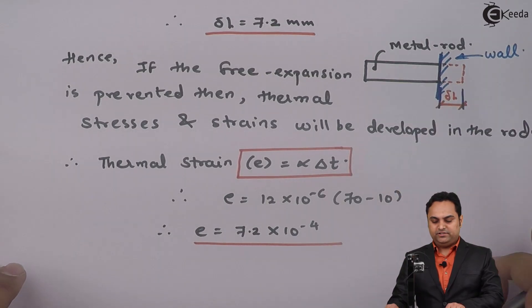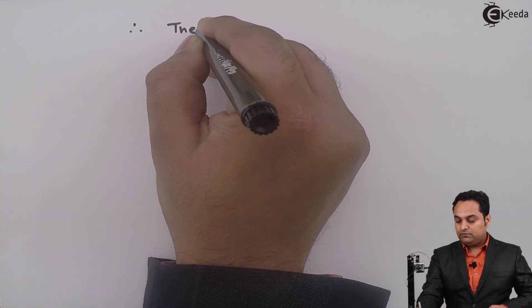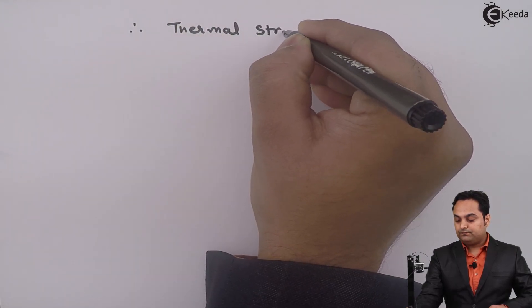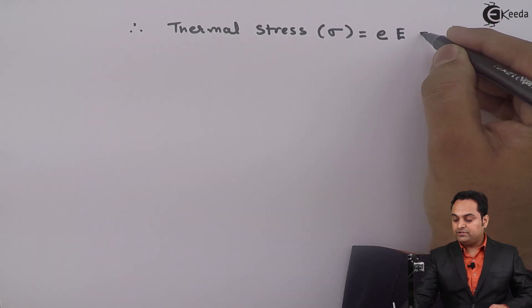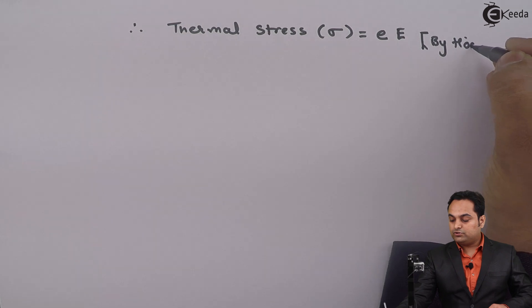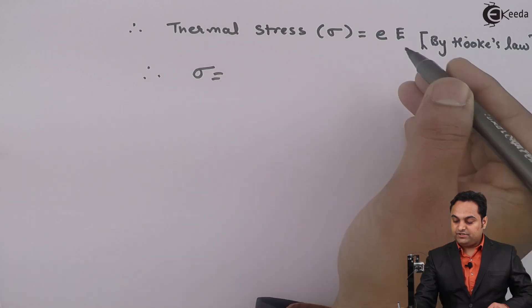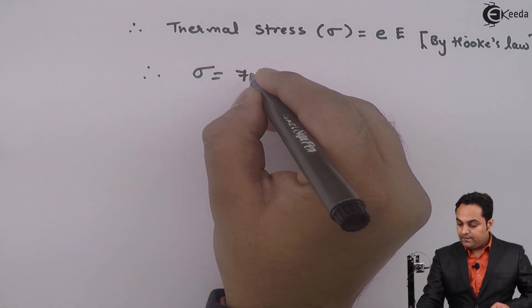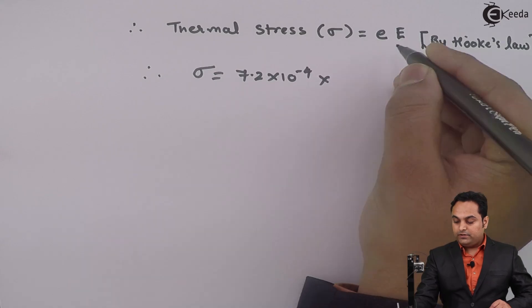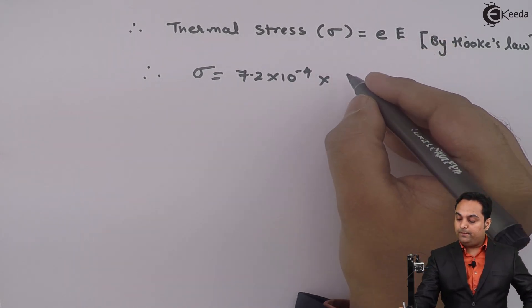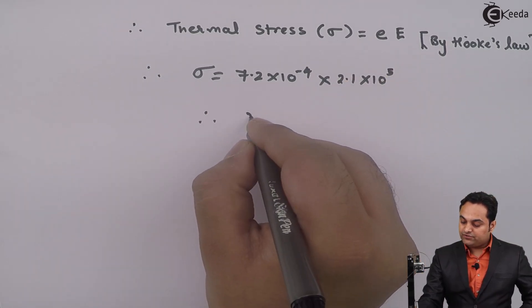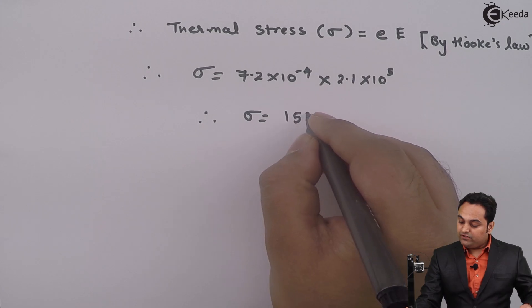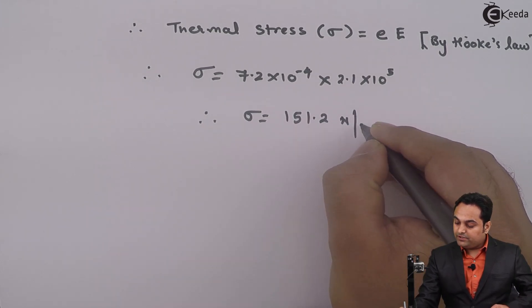After getting the thermal strain, I can find the thermal stress. Thermal stress sigma equals thermal strain into Young's modulus — this formula comes from Hooke's law. Thermal stress equals 7.2×10⁻⁴ multiplied by Young's modulus 2.1×10⁵, giving a stress of 151.2 N/mm².